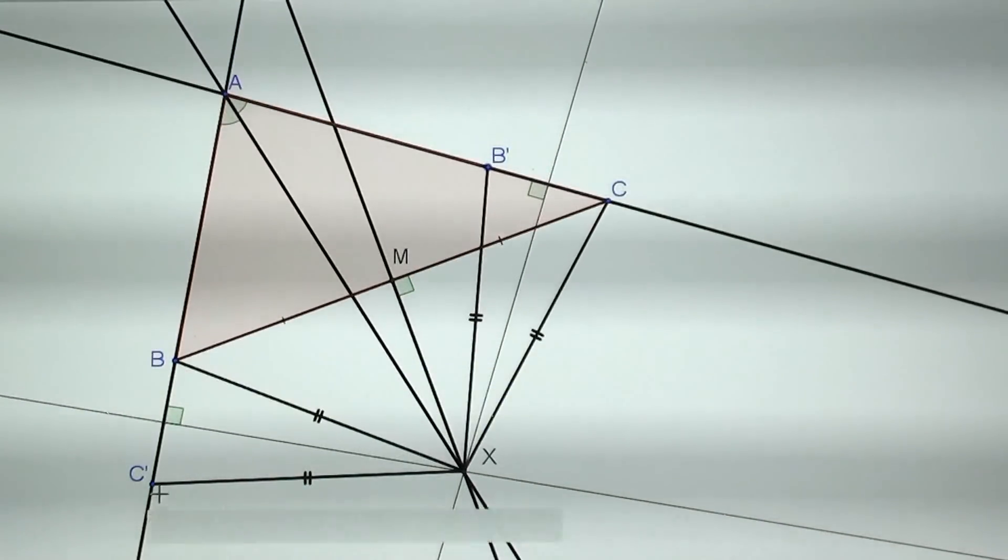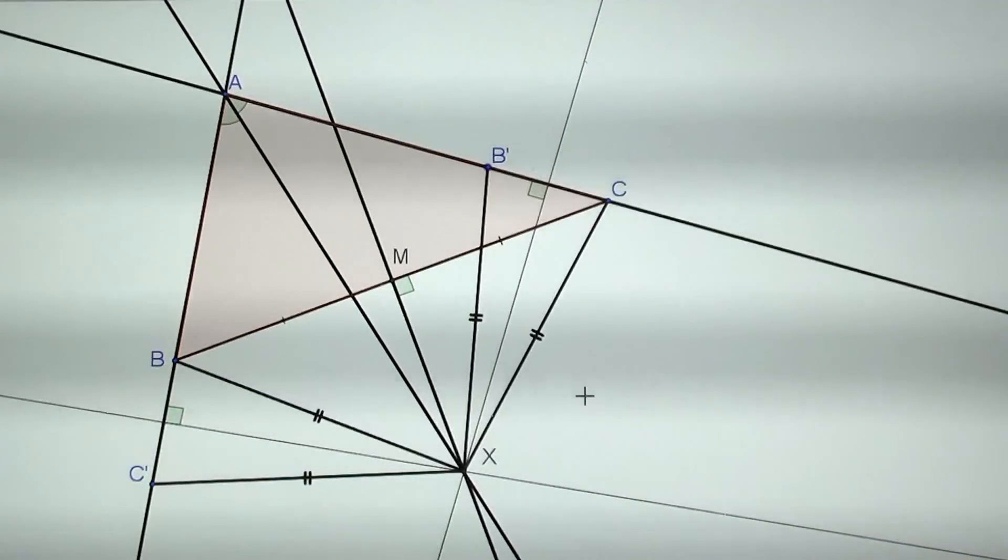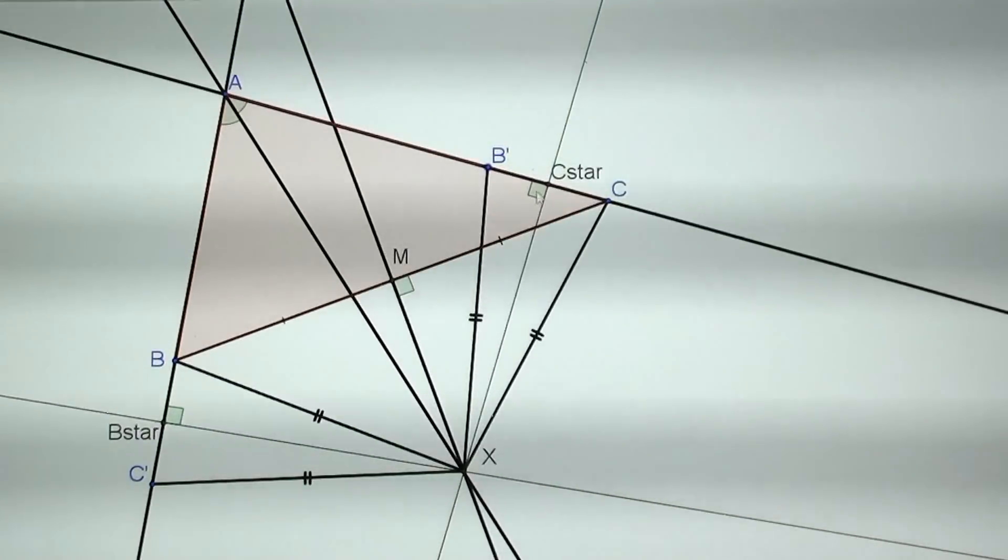That proves something very important: first, that those intersections where this right angle is - one is on AC and the other one, because C prime is outside of AB prime, has to be outside of AB prime. But those two points, what are they? They are actually C star and B star. So C star and B star cannot be at the same time on the same side of the line BC. If C star is on the triangle then B star should be outside of the triangle.